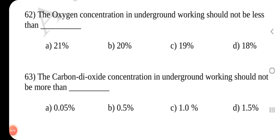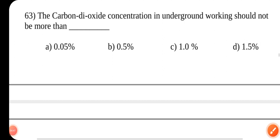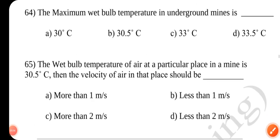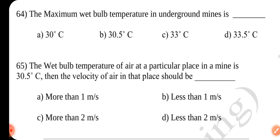Question number 63. The carbon dioxide concentration in underground working should not be more than dash. Answer is B. 0.5%.